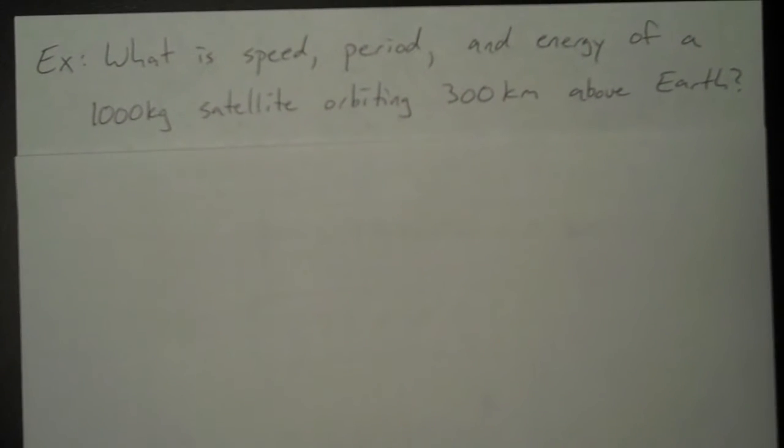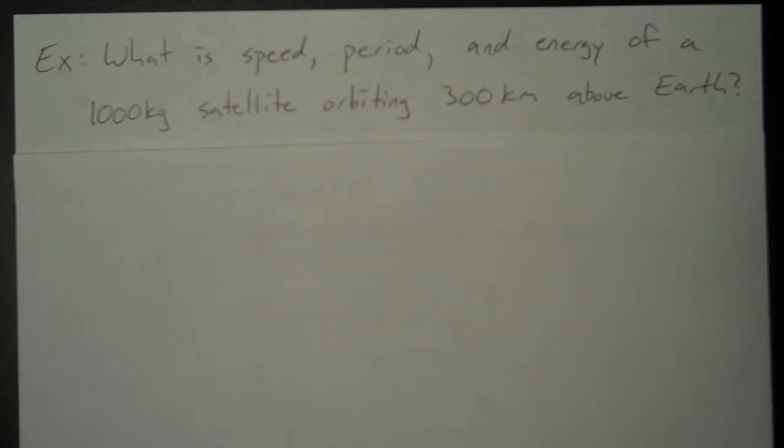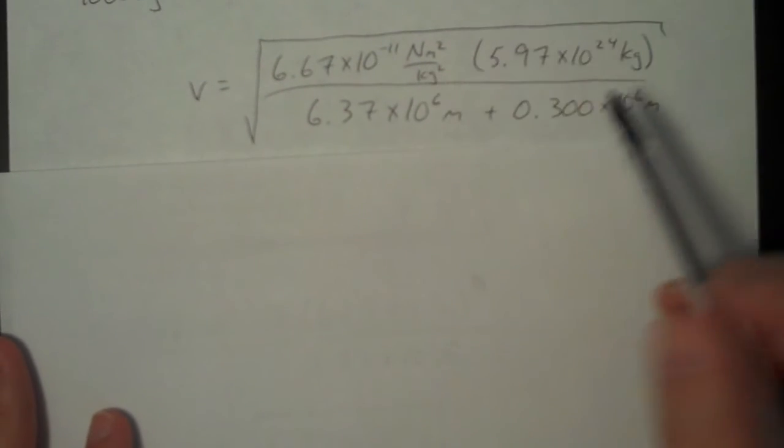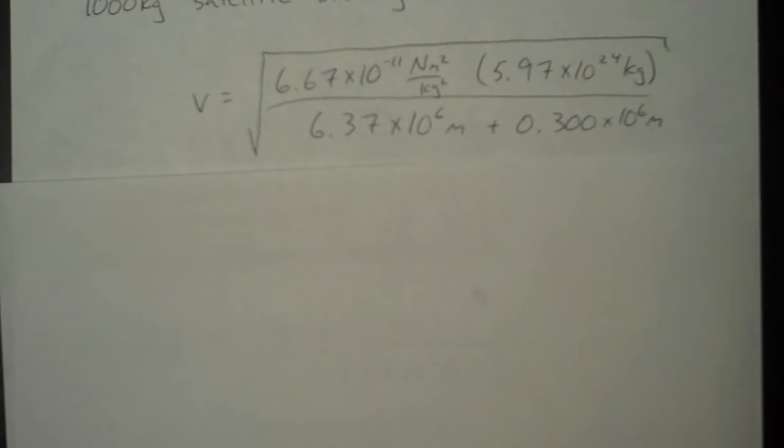So what is the speed, period, and energy of a 1,000 kilogram satellite orbiting 300 kilometers above Earth? These are pretty simple problems because we have a limited amount of equations to work with. To find speed, I use the speed equation. And I'm already plugging in the values.